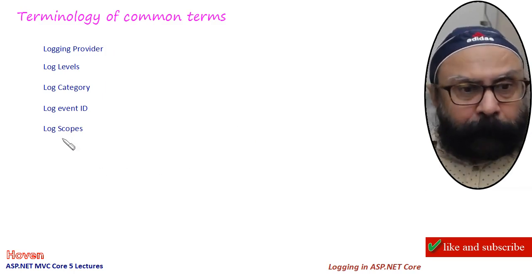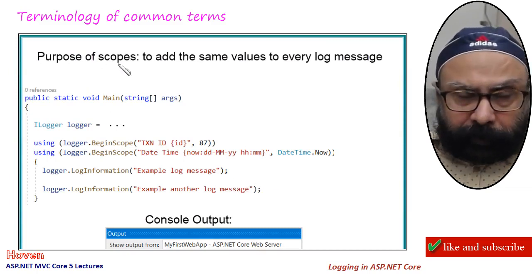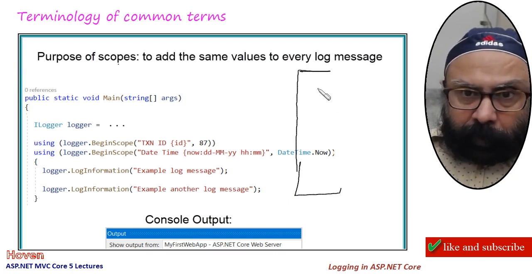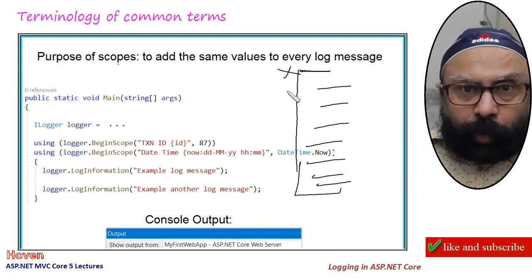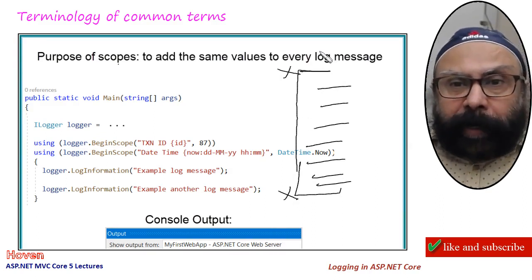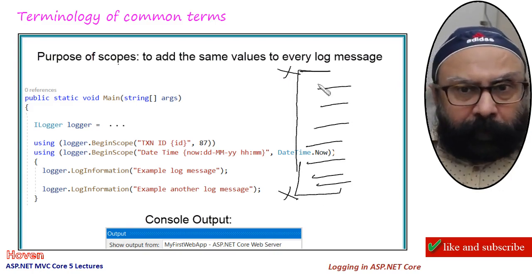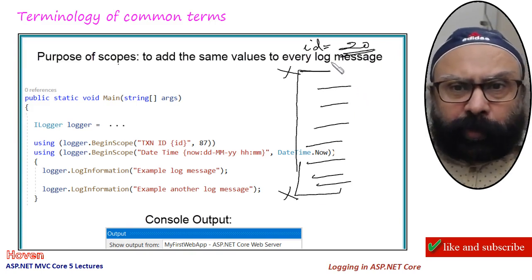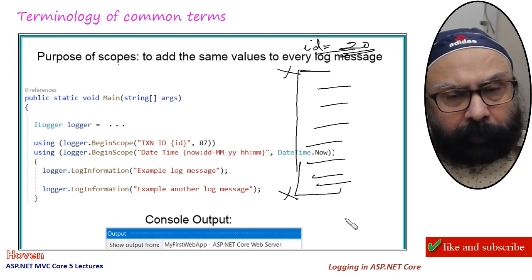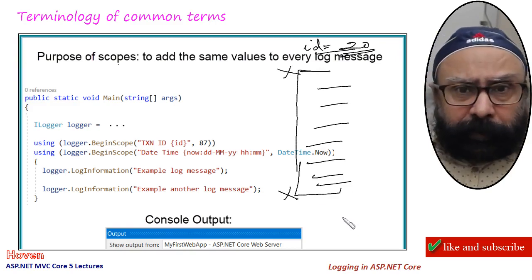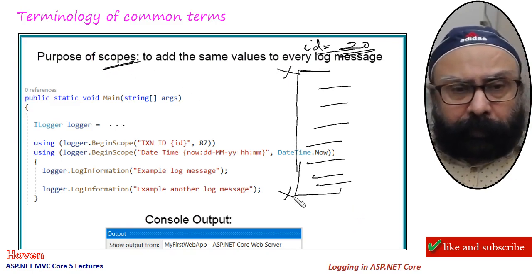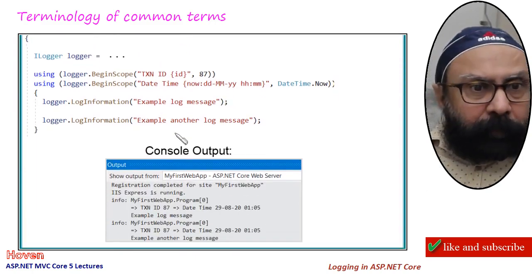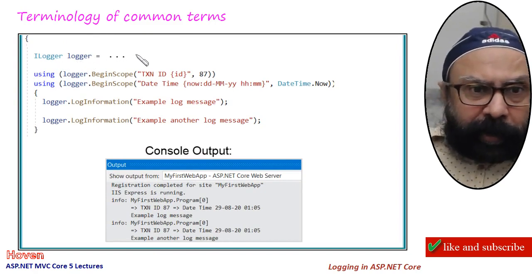Then log scopes. The purpose of scopes is to add the same values to every log message. For example, if you have 20 log messages from one point of code to another, and you want to add a particular data to each of them - maybe an ID equal to 20 - you want to add that to each message. One way is to format that ID into every message, but another method is to use the concept of a scope.